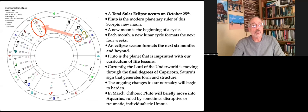A total solar eclipse occurs on October 25th. Pluto is the modern ruler of the Scorpio moon. You can see that the moon is in Scorpio, ruled by Pluto. So Pluto becomes the ruler of the eclipse itself, of this new moon. An eclipse season formats the next six months and beyond. Each month, a new lunar cycle formats the next four weeks, but the eclipse is six months going forward.